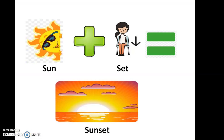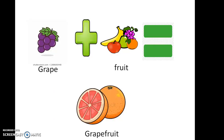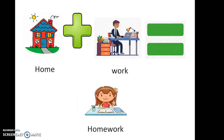Some examples of compound words and how can we join them. Sun + set بصير sunset اللي هي غروب الشمس. Grape + fruit ينتج عنا grapefruit — كلمة مختلفة تماماً عن الكلمتين اللي استخدمناهم. Home + work بنتج عنا homework الواجب المنزلي.